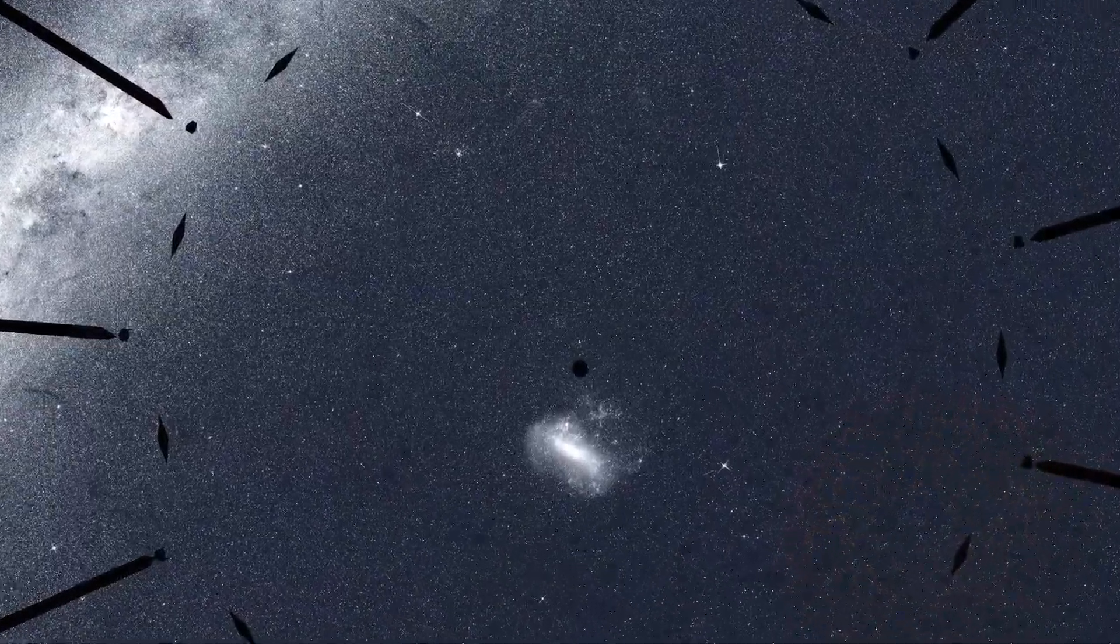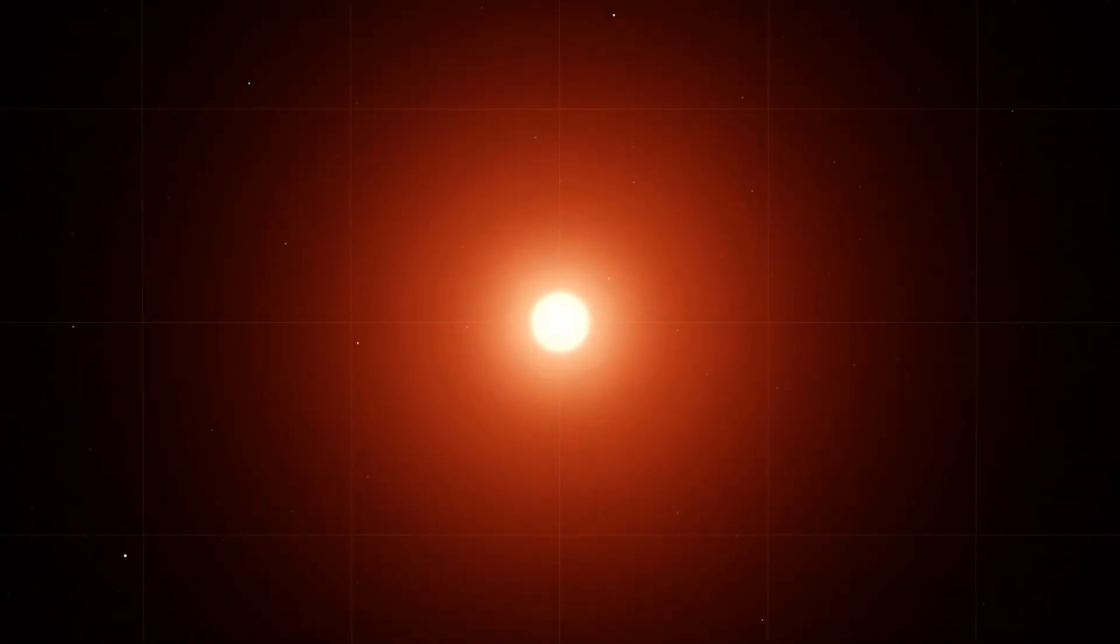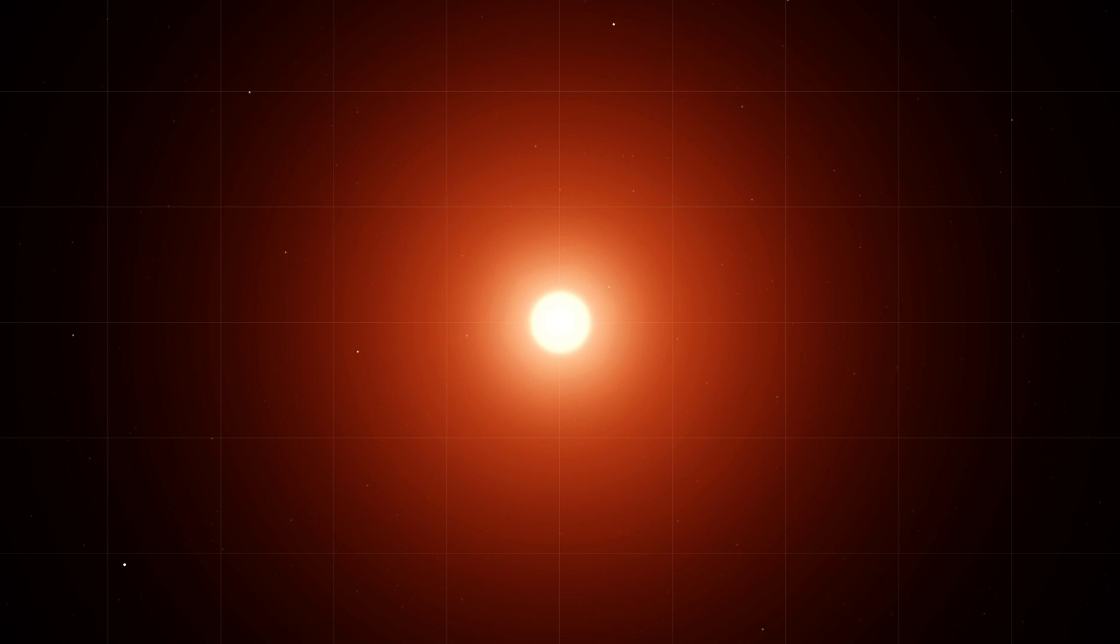One star where TESS saw transits is TOI-700. It's a red dwarf about 40% the mass and size of our Sun, and roughly half its temperature.